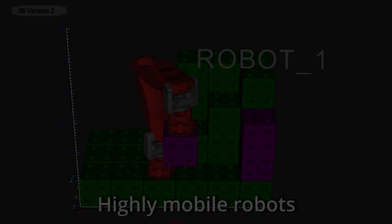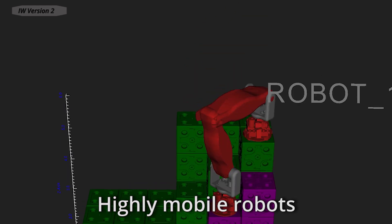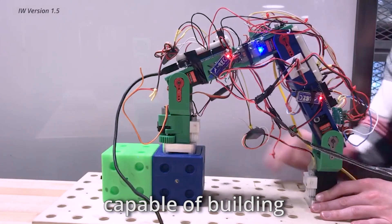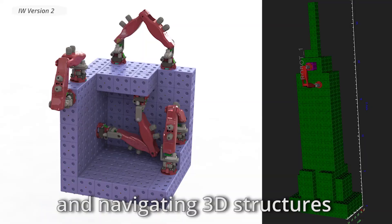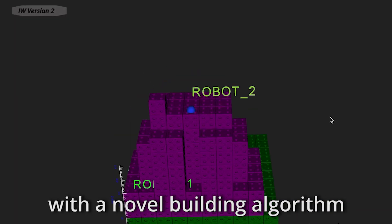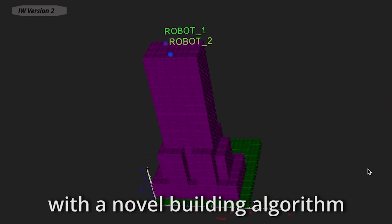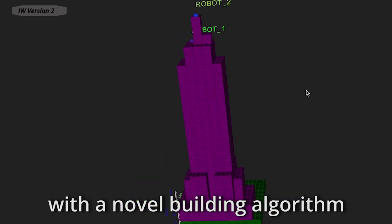Never before has a construction system combined highly mobile robots capable of building and navigating 3D structures with a novel building algorithm that allows robots to collaborate to expedite construction. Until now.